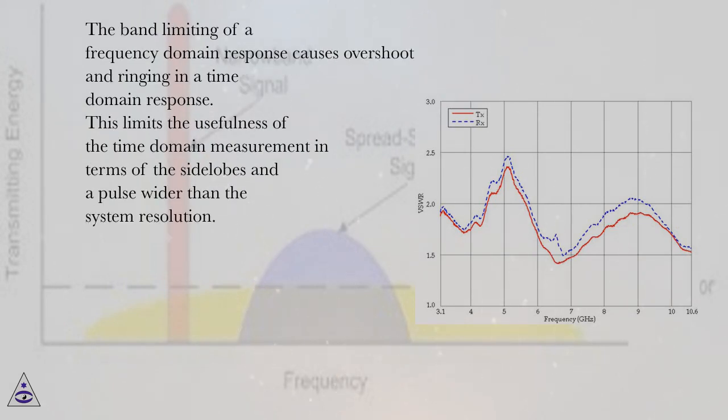The band limiting of a frequency domain response causes overshoot and ringing in a time domain response. This limits the usefulness of the time domain measurement in terms of the sidelobes and a pulse wider than the system resolution.